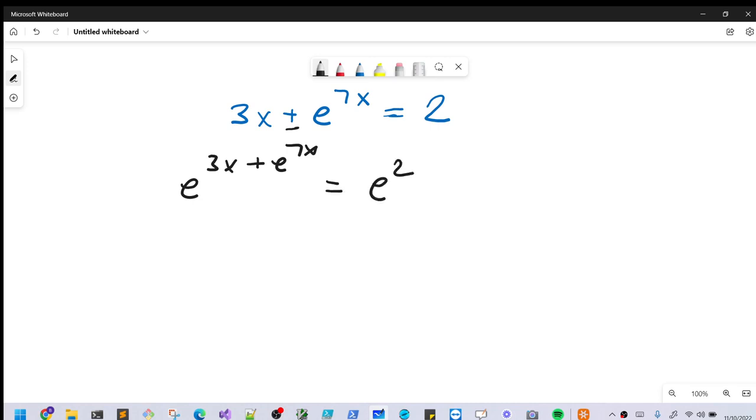And what this is going to allow us to do, we can actually break this up. We can rewrite this as a product actually. So we can write this as e to the 3x times e to the e to the 7x equals e squared.